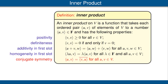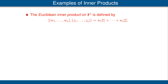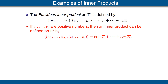Now let's look at some examples of inner products. For our first example, the vector space will be Fn, and we have what is called the Euclidean inner product. If F happens to be the scalar field of real numbers, this inner product agrees with the dot product defined earlier. Here's another example, a generalization of the first one. Suppose we take positive numbers c1 up to cn; then we can define an inner product on Fn as shown by the equation here. If all the c's are equal to 1, then we have the example from the first bullet point.